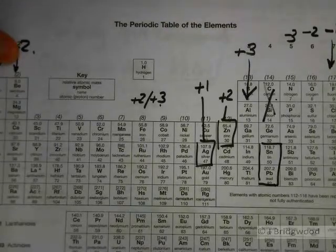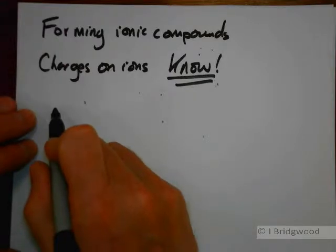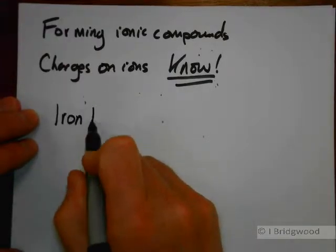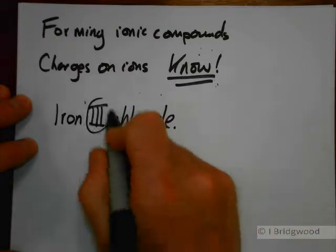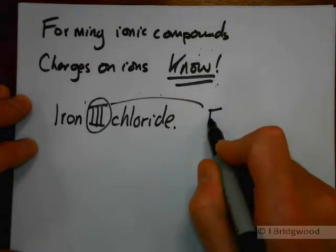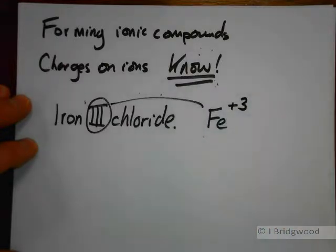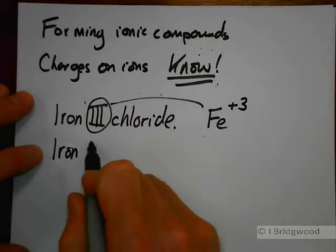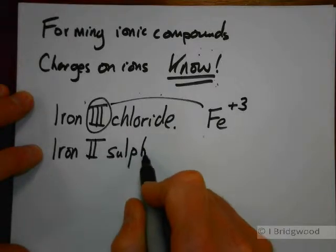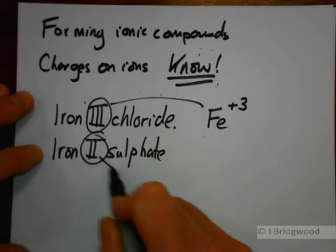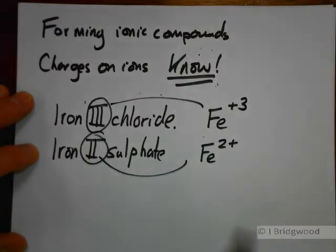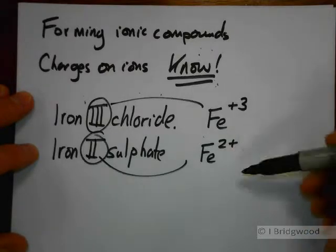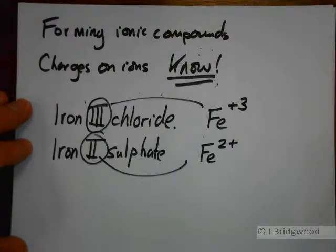It is sometimes possible to get an idea about charges from the compound name. For example, iron(III) chloride — the Roman numeral three tells you for all intents and purposes that you have a three-plus iron. Iron(II) sulfate — the two tells you the charge is a two-plus iron. These Roman numerals aren't really indicating charges per se; they're indicating oxidation numbers, but we'll consider those later.